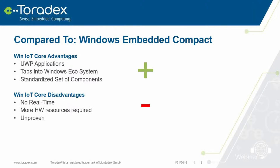Windows IoT Core has a standard set of components. On Windows CE, you could take everything out of the operating system, which made it hard for third-party software providers to know what to target since every vendor had slightly different components. With Windows IoT Core, there is a clear API layer and a clear minimum standard of components that you can program against.